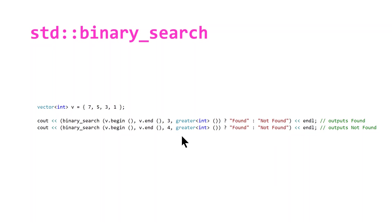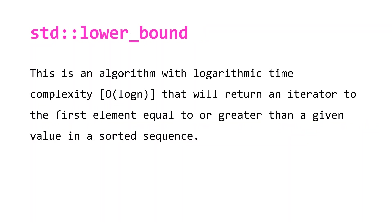The second line will return 'found' and the last line, searching for four which doesn't exist, will return 'not found'. For std::lower_bound, this is an algorithm with logarithmic time complexity O(log n) that will return an iterator to the first element equal to or greater than a given value in a sorted sequence. Similar to binary_search, but instead of returning true or false it returns an iterator pointing to an element — specifically the first instance of that element, or if no exact match, the next greatest element.